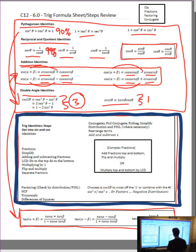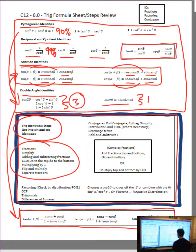So I'm going to circle them in red. Top left, our first method: use the trig identities above and get it into sines and cosines as quickly as possible. Below that, fractions: simplifying, adding and subtracting LCD, do the top, do the bottom, multiply by one, flip and multiply, separate fractions.